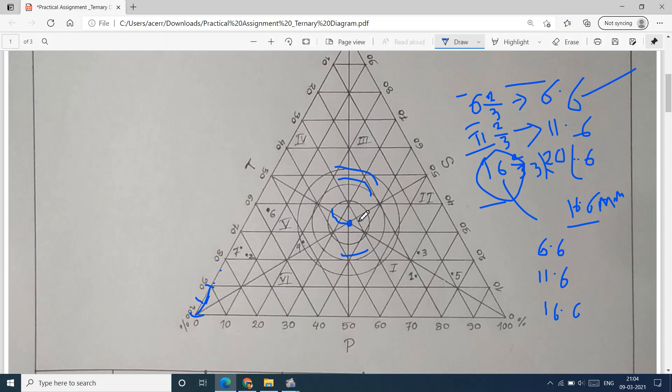That's it, very easy. But the problem will be how to take this 0.6 millimeter. You can just adjust or ignore it - no issue. You can just take 6, 11, and 16.